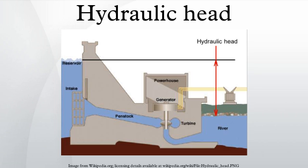The total hydraulic head of a fluid is composed of pressure head and elevation head. The pressure head is the equivalent gauge pressure of a column of water at the base of the piezometer, and the elevation head is the relative potential energy in terms of an elevation. The head equation — a simplified form of the Bernoulli principle for incompressible fluids — can be expressed as: h is the hydraulic head, also known as the piezometric head; ψ is the pressure head, in terms of the elevation difference of the water column relative to the piezometer bottom; and z is the elevation at the piezometer bottom.